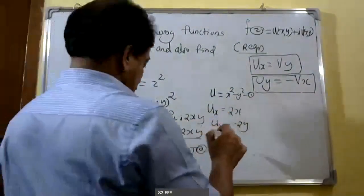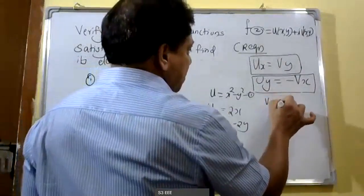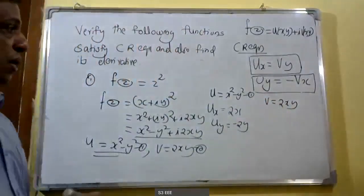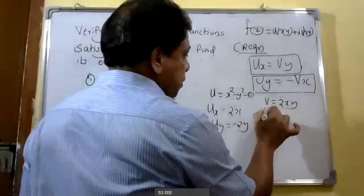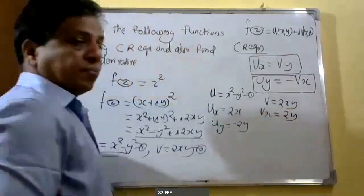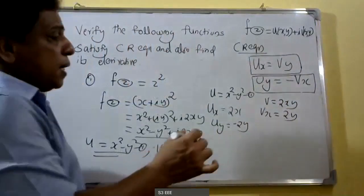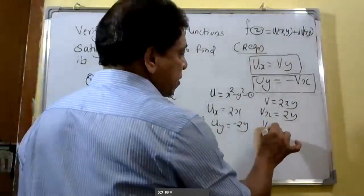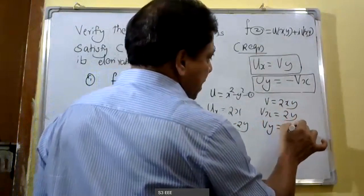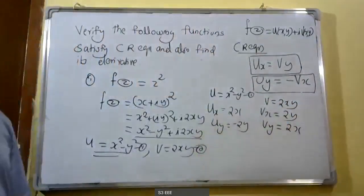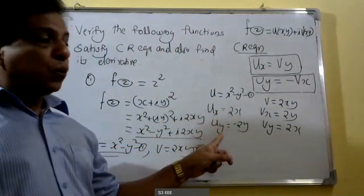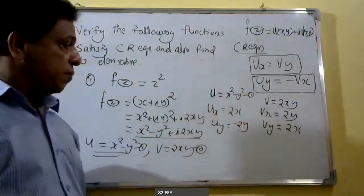Similarly, v equals 2xy. Partially differentiating with respect to x, we get v_x equals 2y. Again, partially differentiating with respect to y, we get v_y equal to 2x. These are the partial derivatives: u_x, u_y, v_x, and v_y.